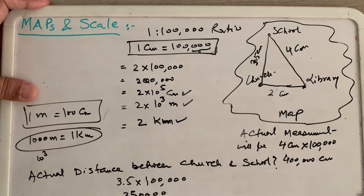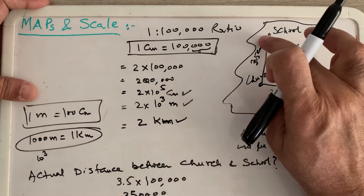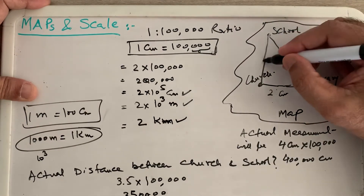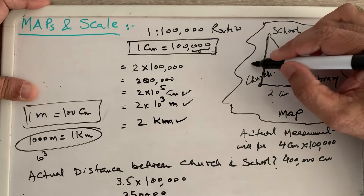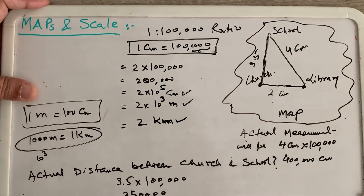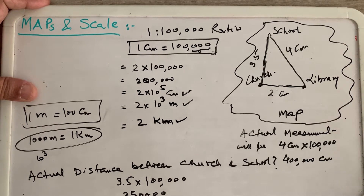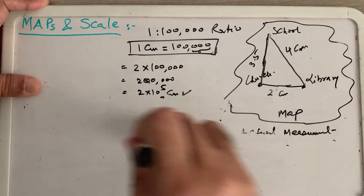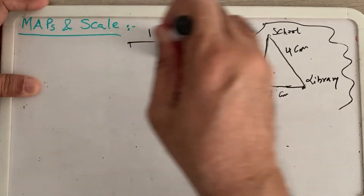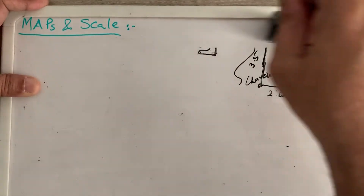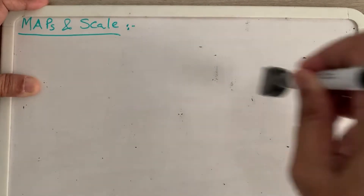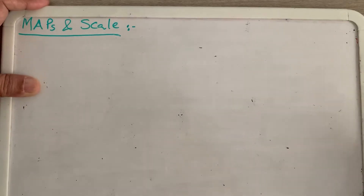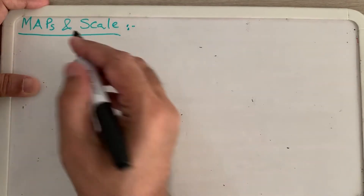Questions can be asked in any way. What a student needs to understand is that we cannot represent the whole large distance on the map, so we take a ratio called the scale of the map. The scale reduces the actual amount so it can be shown on the map.